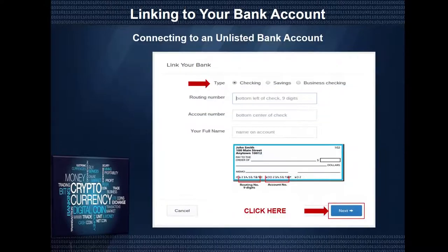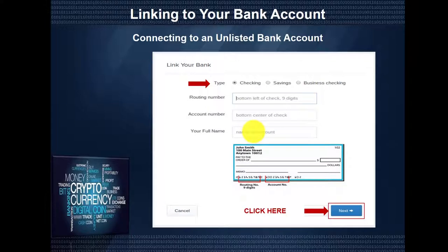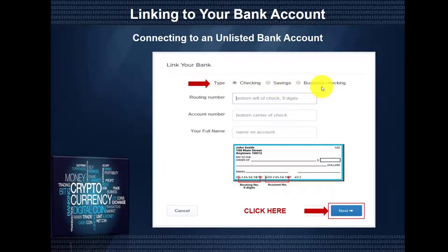This screen will appear if you choose Other Bank. You will be prompted for your bank's routing number, your bank account number, and the name on your bank account. Again, that name must match the name you used to create your Coinbase account. You're also going to be asked for the type of account, whether it's a checking, savings, or business checking. Once you've filled in that information, click Next.